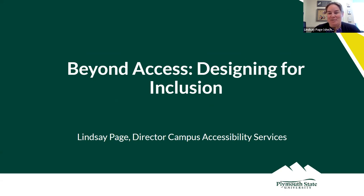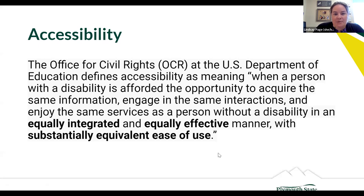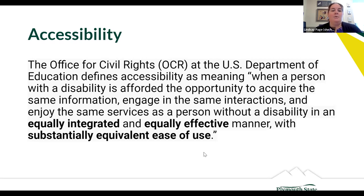Thank you all for attending — I really appreciate this opportunity. I'll be talking today about 'Beyond Access and Designing for Inclusion.' To start, I want to ground ourselves in a couple of definitions. Captions should be enabled, so feel free to click that on if you need to. For a definition of accessibility, I went to the Office of Civil Rights. The OCR at the U.S. Department of Education defines accessibility as meaning when a person with a disability is afforded the opportunity to acquire the same information, engage in the same interactions, and enjoy the same services as a person without a disability, in an equally integrated and equally effective manner with substantially equivalent ease of use.